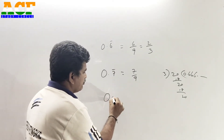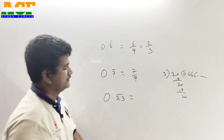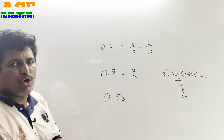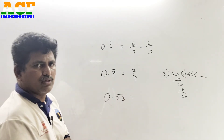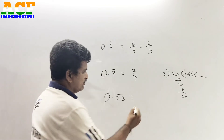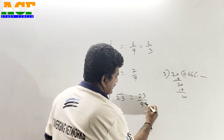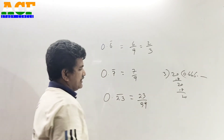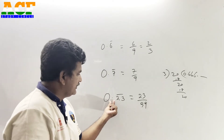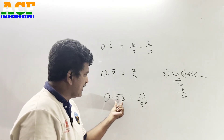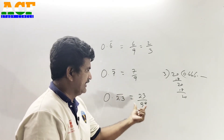Next question: 0.23 under bar. Same rule — the answer is 23 by 99. Here we have a 2-digit bar, so we use 2 nines in the denominator.